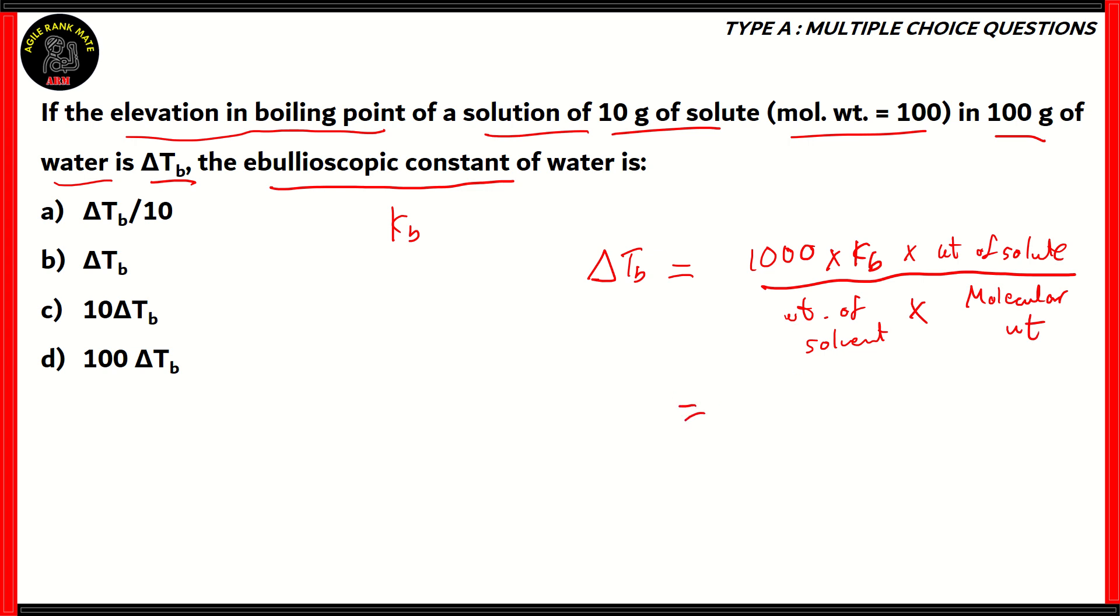Let's substitute the values. It will be 1000, Kb stays the same, the weight of solute is given as 10 grams, and both molecular weight and the given weight are 100. So, 100 times 100. 10 gets cut out here, the three zeros get cut out here. So basically, the final answer turns out to be Kb.